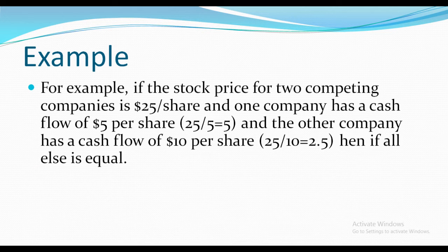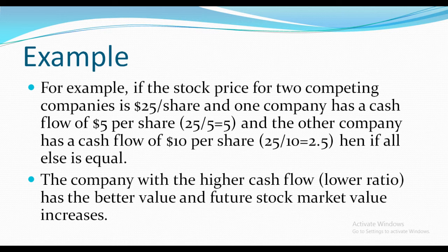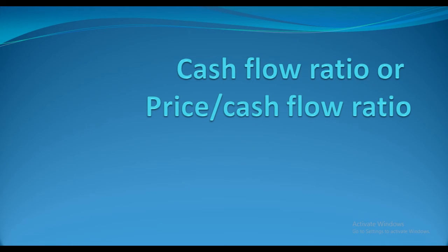For example, if the stock price for two competing companies is $25 per share, and one company has a cash flow of $5 per share while the other has $10 per share, then all else equal, the company with the higher cash flow — that is, the lower ratio — has a better value and future stock market value increases.